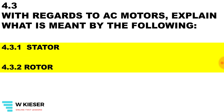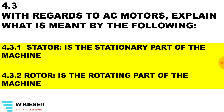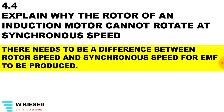With regards to AC motors, explain what is meant by the stator and rotor. The stator is the stationary part of the machine and the rotor is the rotating part of the machine. Explain why the rotor of an induction motor cannot rotate at synchronous speed. There needs to be a difference between rotor speed and synchronous speed in order to generate EMF, and this is known as SLIP.